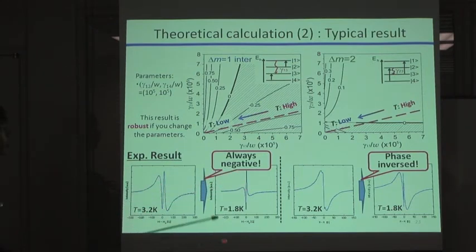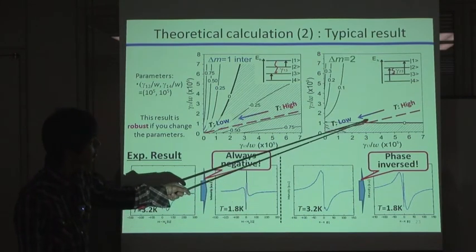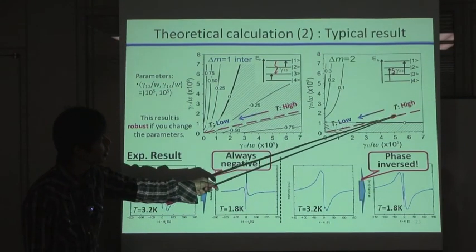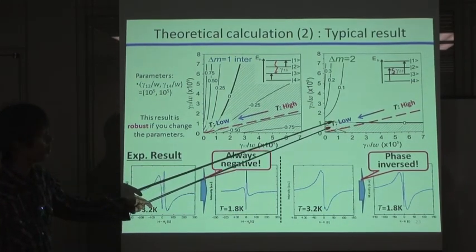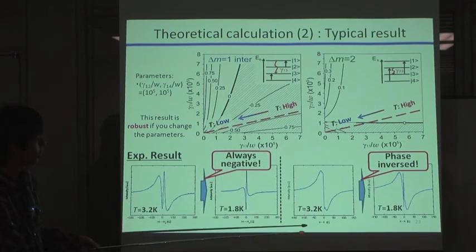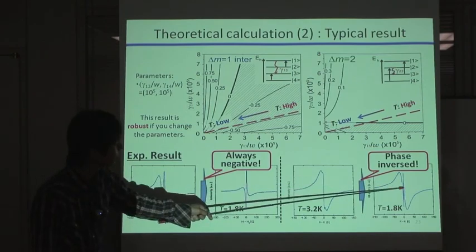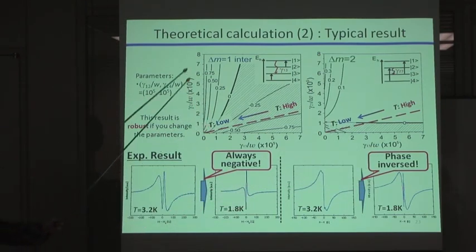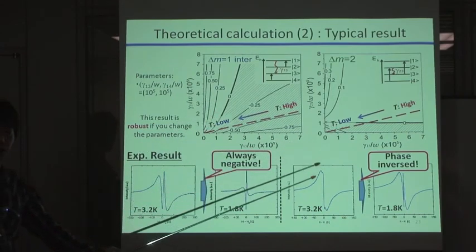In contrast, if you see the M2 transition, at this point, the phase is inverted. So this picture is corresponding to the change of the phase of the substructure like this. So our calculation result agrees well with experimental data.